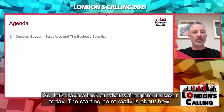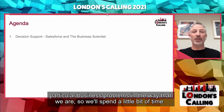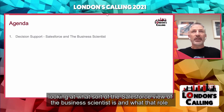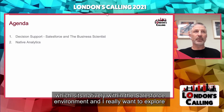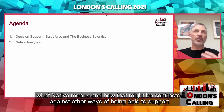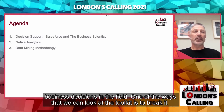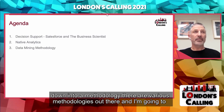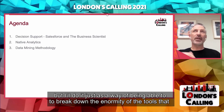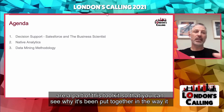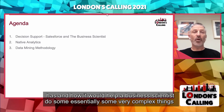Let's have a look at what we're going to cover today. The starting point is about how we have come up with the toolkits that we have and why we're trying to solve particular business problems in the way that we are. We'll spend a little bit of time looking at the Salesforce view of a business scientist and what that role is and how that's supported. The big thing that we've done is to build a toolkit which sits natively within the Salesforce environment, and I really want to explore what native means and how that might be contrasted against other ways of being able to support business decisions in the field. One of the ways we can look at the toolkit is to break it down into a methodology, and I'll use one I'm very familiar with, to break down the enormity of the tools so you can see why it's been put together and how it would help a business scientist do some very complex things in the real world.